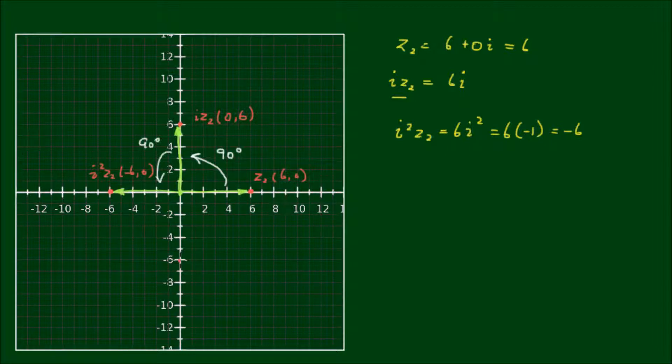So it follows then that i cubed z2 would be down here, would be negative 6i. And if we multiply by i again, it's another rotation anticlockwise by 90 degrees. And we get back to what we have in the beginning.